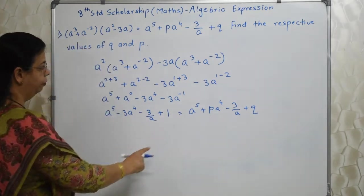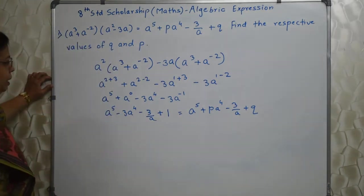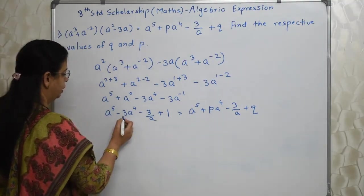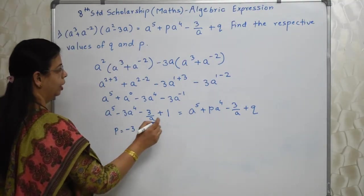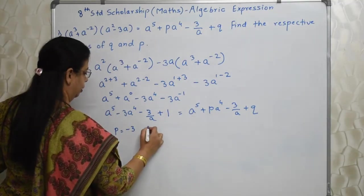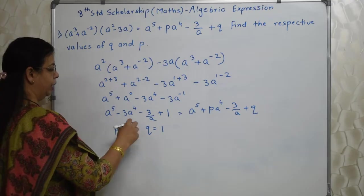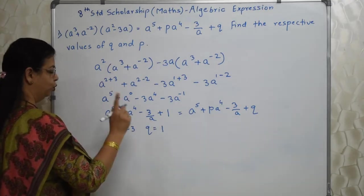Isn't it looking similar? Yes. We can easily find out the value of P now. P is here. So P is minus 3 and Q is 1. So in option, minus 3, 1 will be there. If you choose that, gone.